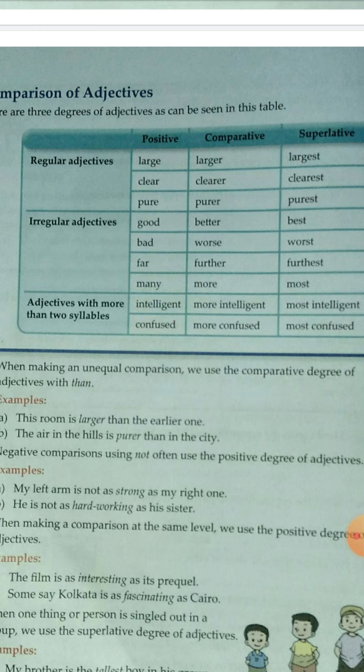There are also irregular adjectives, which do not end with '-er' or '-est' but have different forms. For example: good, better, best; bad, worse, worst; far, further, furthest; many, more, most. These are irregular adjectives.